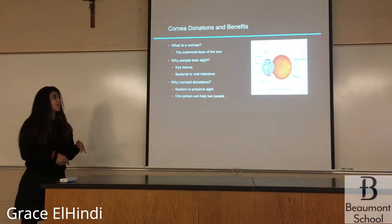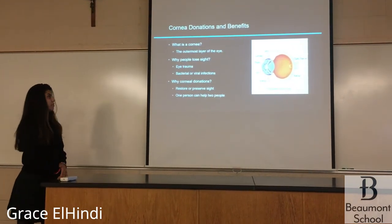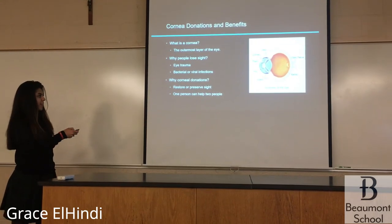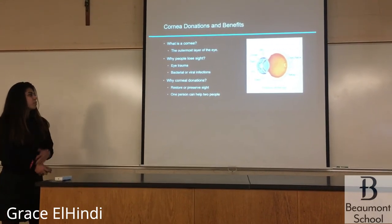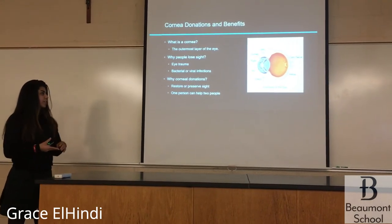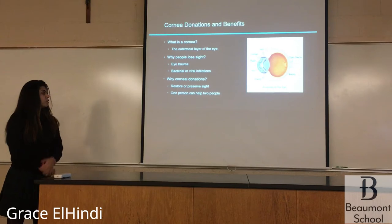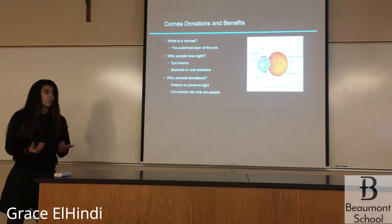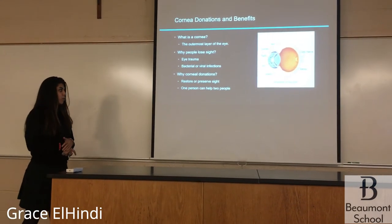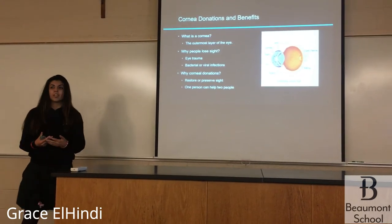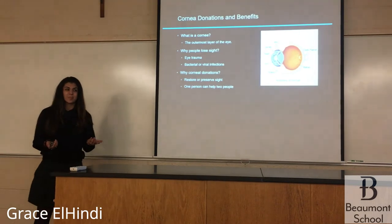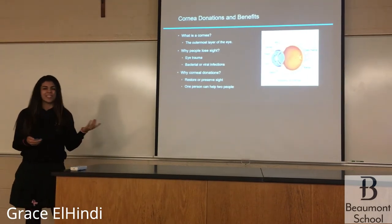A little background on cornea donations and the benefits: a cornea is the outermost layer of the eye. People lose their sight in many different ways, such as eye trauma and bacterial or viral infections. Cornea donations restore preserved sight, and one person's cornea may help two people. I was interested in this project because my mom actually had a cornea transplant, so I really wanted to learn more about it.